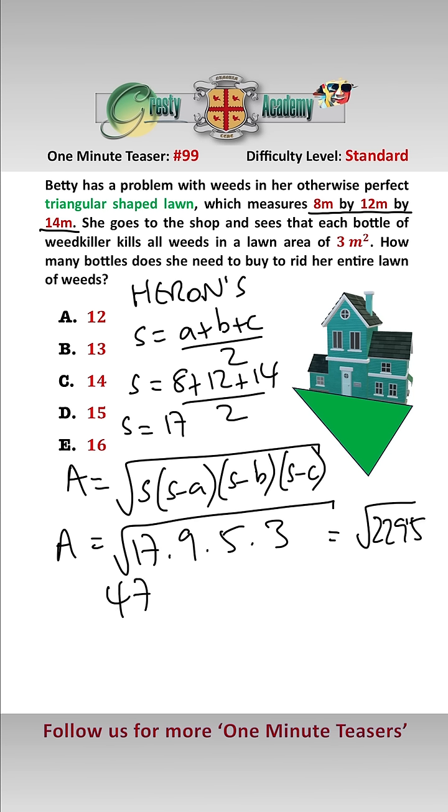And the square root of 2295 is 47.906 metres squared. So that is the area of Heron's garden.